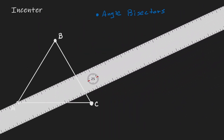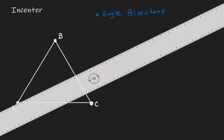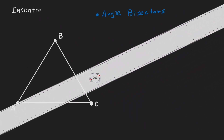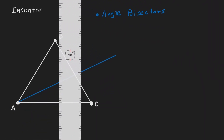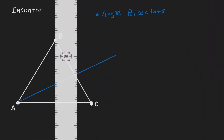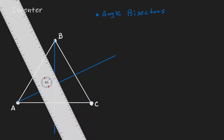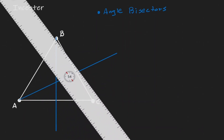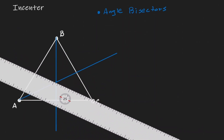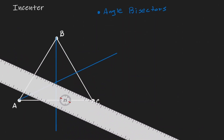So let's say we cut angle A in half — that should be around there. Let's say we cut angle B in half — that should be around there. And let's say we cut angle C in half — that should be around there.